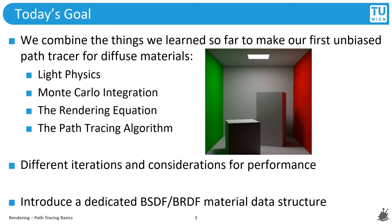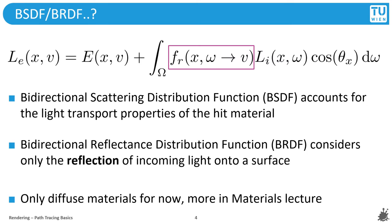Towards the end, we will also introduce a dedicated interface for the BSDF or BRDF, which we already mentioned a few times, so that we can cleanly separate material-related computations from our basic path tracing algorithm. The full name of the BSDF is the Bidirectional Scattering Distribution Function, and it is the part of the rendering equation that so far we mostly ignored or replaced with something constant in examples.